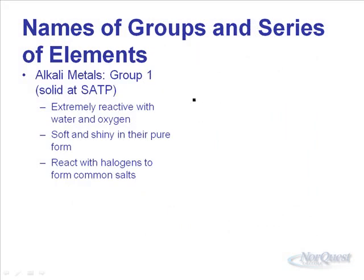Group 1 elements — the alkali metals — are all solid at SATP. They're extremely reactive with oxygen and soft and shiny in their pure form. They react with halogens to form common salts. For example, sodium metal is shiny and bendable, but it's so reactive that if you expose it to air or water, it immediately forms sodium compounds that are white and crystalline — that's what we commonly see, not sodium itself.